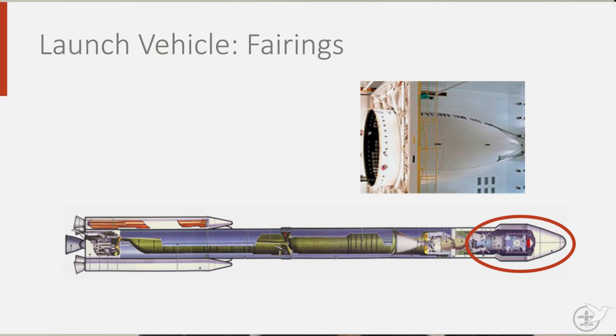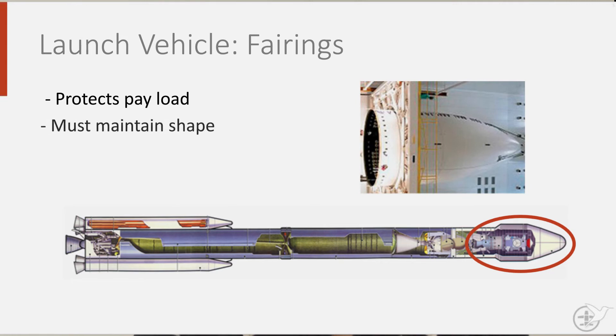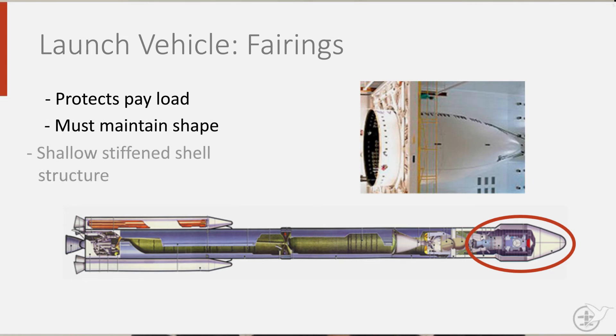Fairings have as their main function to protect the payload during the launch from the aggressive environment around it. They must maintain their shape and are therefore often designed as shallow, stiffened structures.